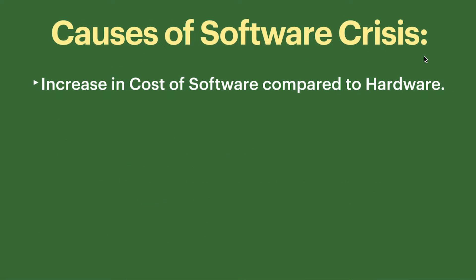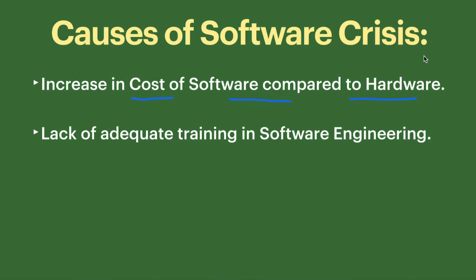Another cause is an increase in the cost of software compared to hardware. If we are purchasing a lot of hardware for development and the hardware cost exceeds the cost of the software itself, that is a cause of software crisis because our development cost should always remain less than the budget. Another cause is the lack of adequate training in software engineers — if engineers are not trained in the particular field or language being used, it leads to a lack of knowledge, which is another reason for software crisis.